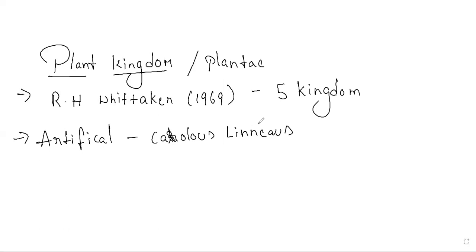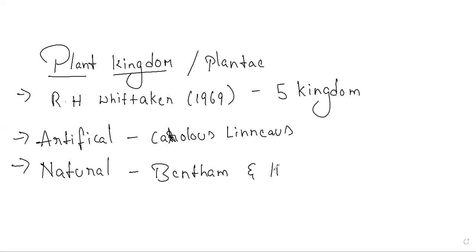As against the artificial system, the natural system of classification was developed, based on natural affinities among organisms. Not only external characters but also internal characters were considered, making it more widely accepted. This system was given by Bentham and Hooker. They also considered ultrastructure, anatomy, embryology, and phytochemistry. The classification of flowering plants into monocots, dicots, and related groups was actually given by Bentham and Hooker — this is a very important point.